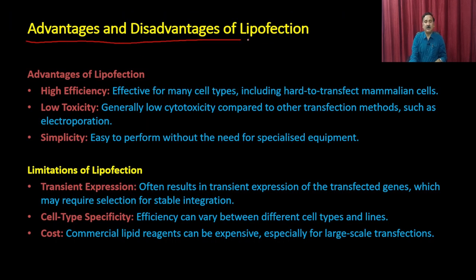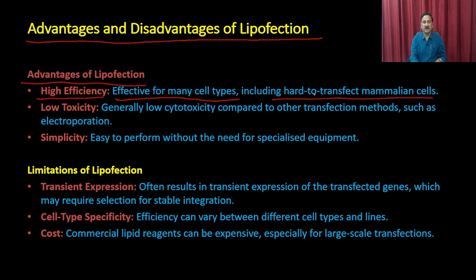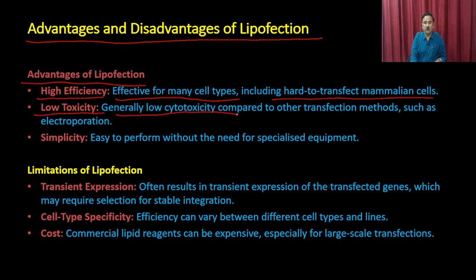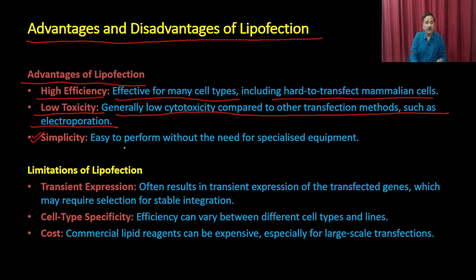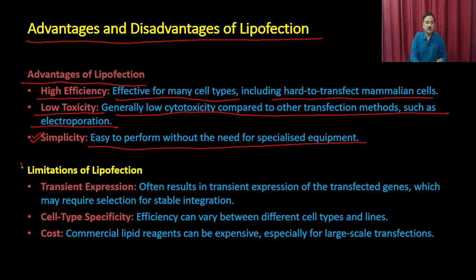The advantages of lipofectamine include high efficiency and effectiveness for many cell types including hard-to-transfect mammalian cells, and low toxicity — generally low cytotoxicity compared to other methods such as electroporation. It is also simple to perform without specialized equipment. The limitations include that it often results in transient expression, which may require selection for stable integration; efficiency can vary between different cell types and cell lines; and the cost is a major issue, as commercial lipid reagents can be expensive especially for large-scale transfections.